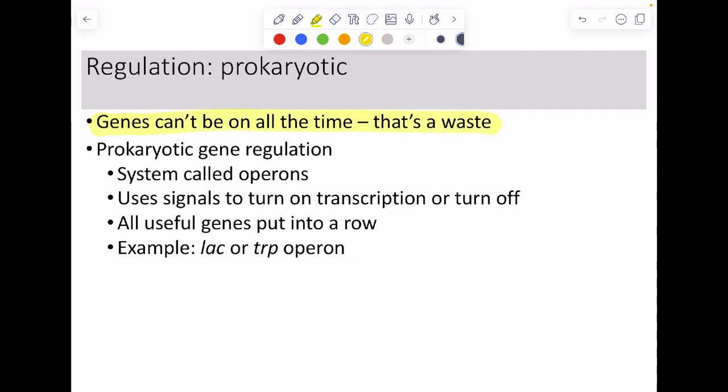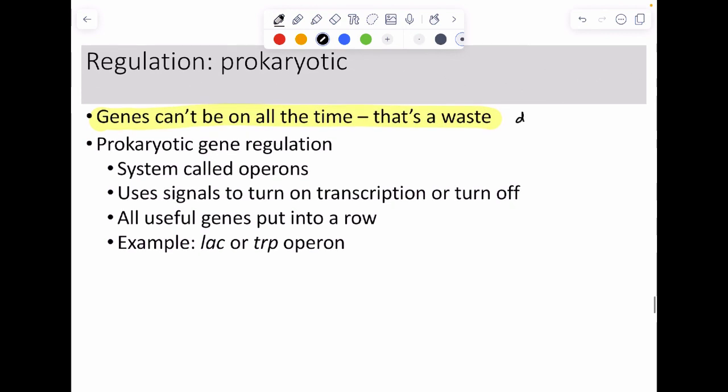Genes can't be on all the time because it's kind of a waste and sometimes it's dumb. If I were to look at how we develop, all the genes that we need to go from a single cell to the trillions of cells that we are, a lot of those we don't need anymore. They're only needed for a very short amount of time and then we need to stop. Organisms are all the exact same way in that regard.